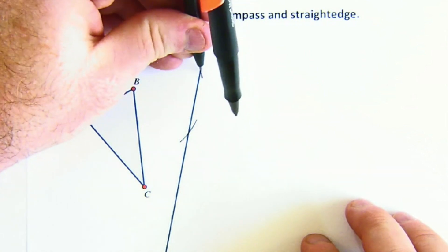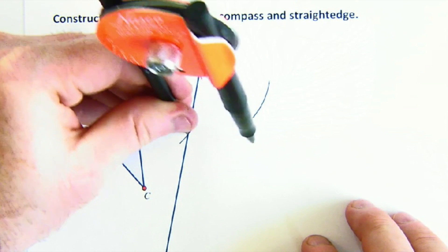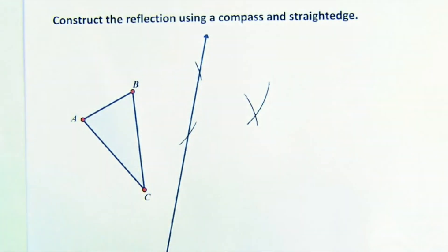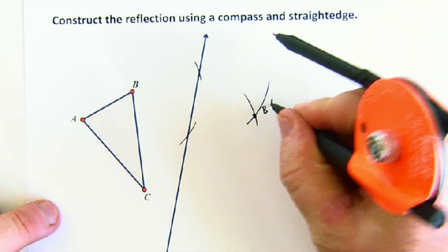and then we place our pointer on those two locations, and create a location that is on the opposite side, B prime.